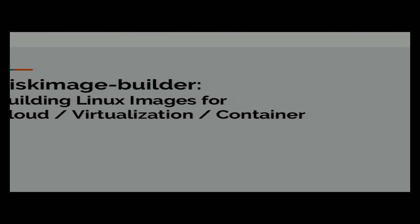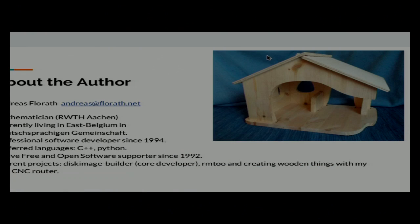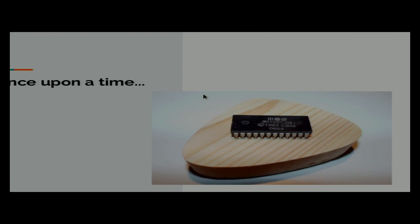Thank you for coming. This talk is about disk image builder and creating operating system images with this tool. Before defining what an operating system image is, let's have a look at the history. Once upon a time, operating system images looked like this — a Commodore 64 floppy, about 30 years old, roughly eight kilobytes. These days modern operating systems are much bigger and stored on disks, but in principle it's the same data.